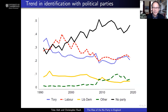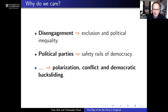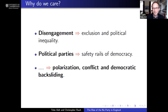Half the electorate today does not identify with one of the main political parties. We care about this for two reasons. First, political disengagement leads to exclusion and political inequality, because political parties pay very little attention to groups of voters who have disengaged. Second, political disengagement undermines the role of parties in maintaining democracy — parties play an important role in keeping the informal norms and conventions that keep democracy working. They're part of the safety rails of democracy, and their erosion can lead to polarization and what political scientists call democratic backsliding.